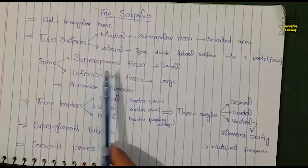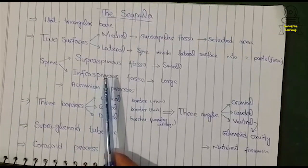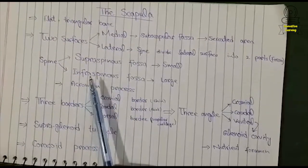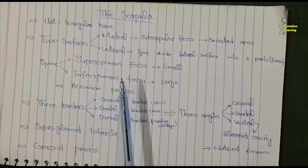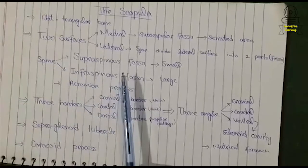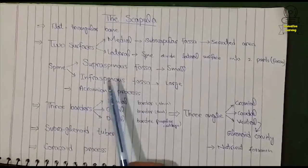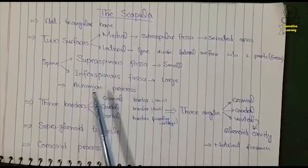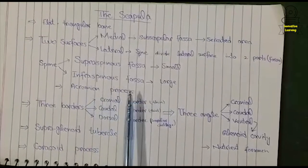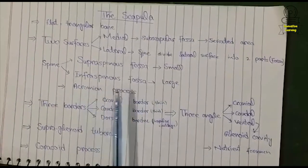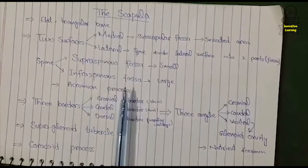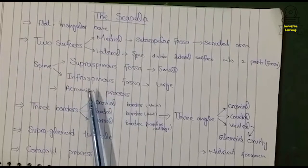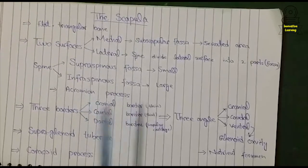The supraspinous fossa is present toward the cranial border of the scapula bone and is small in size compared to the infraspinous fossa. The infraspinous fossa is present toward the caudal border of the scapula bone and is large in size.